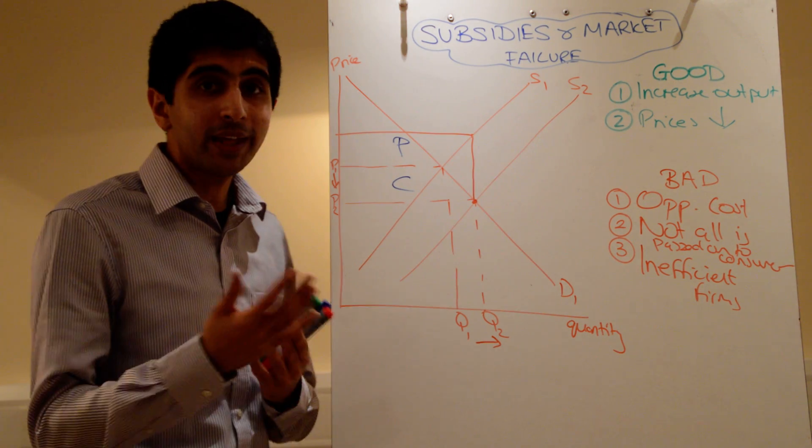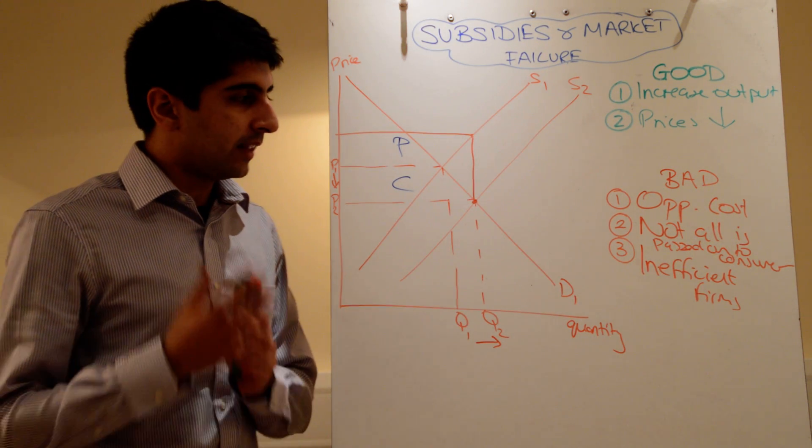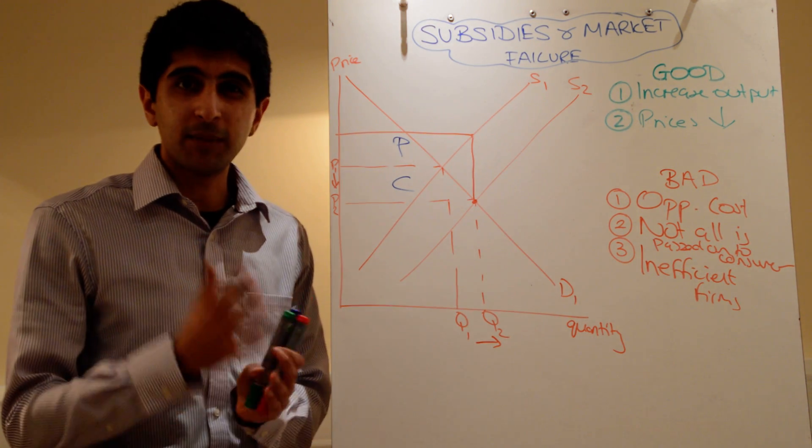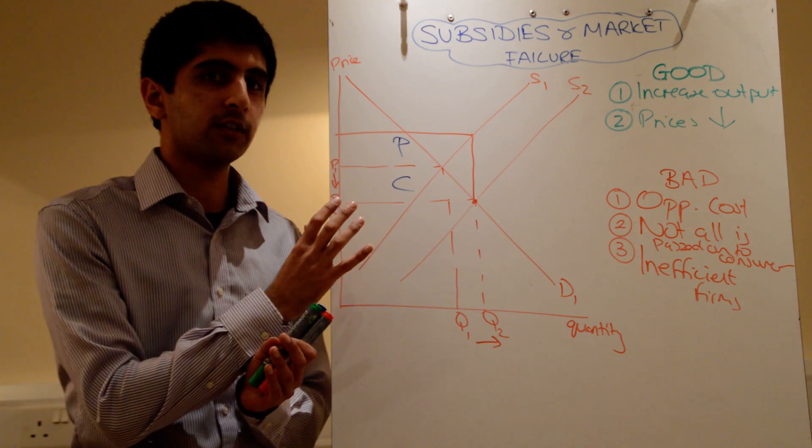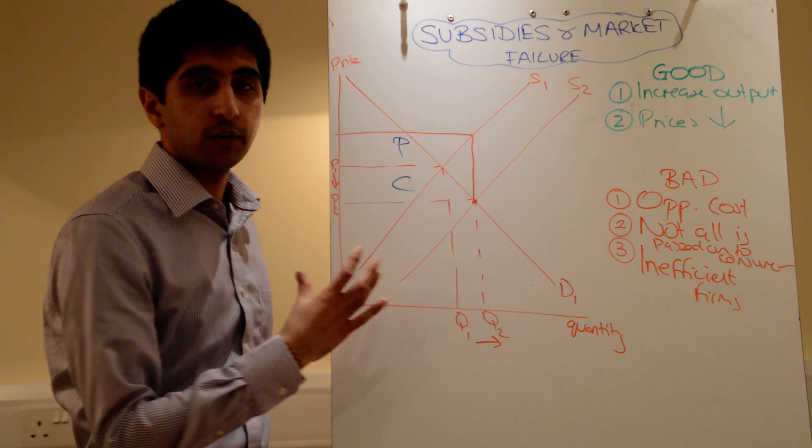It also depends on who gets the subsidy. Like we said, if inefficient firms get them, the incentives for them to use the subsidy might be different to the actual core intentions. So, in that sense, who's given the subsidy is important as well, if we're looking at solving market failure.